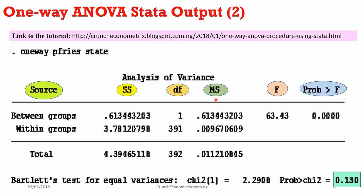MS indicates mean sum of squares, obtained by dividing the sum of squares by their respective degrees of freedom. Once you do that for these two groups, you obtain their respective mean sum of squares. Next I have the F statistic, indexed by two degrees of freedom: 1 for the numerator and 391 for the denominator. The F statistic of 63.43 is highly significant, giving evidence that the means of these groups differ from one another. Since I only have two groups, their means are not the same, so I can reject the null hypothesis. The p-value is exactly zero, which is far below my 5% level of significance, giving me confidence to reject the null in favor of the alternative hypothesis.